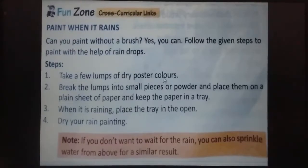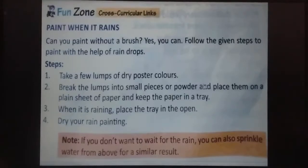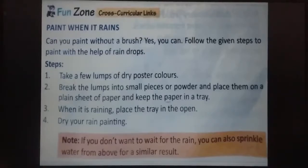Step one: take a few lumps of dry poster colors. Lumps means solid pieces — they can be square or round shaped. Then break the lumps into small pieces or make a powder. Place them on a plain sheet of paper — sprinkle the powder on the sheet. Then keep the paper in a tray.